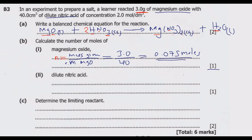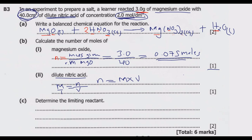That gives one mark for the answer of 0.075 moles. Now part (b) part two: the number of moles of dilute nitric acid. We have been given the volume of nitric acid and the concentration. Molarity is given by number of moles divided by volume in dm³. To find the number of moles, cross multiply: n = molarity × volume. The molarity is 2.0 mol/dm³, and we need to convert 40 cm³ to dm³ — knowing that 1000 cm³ equals one dm³.